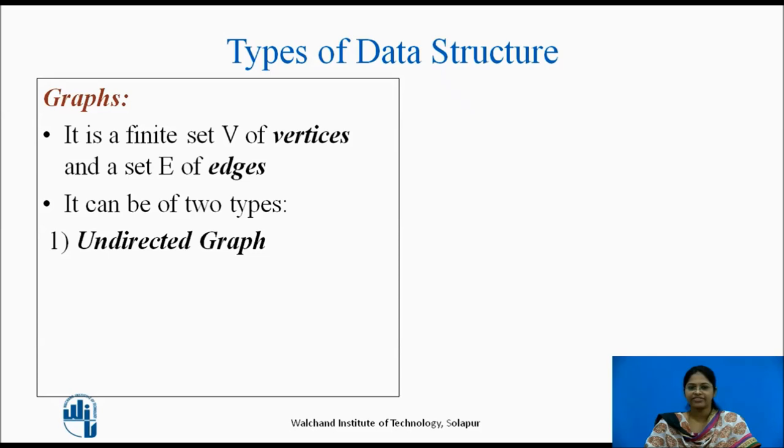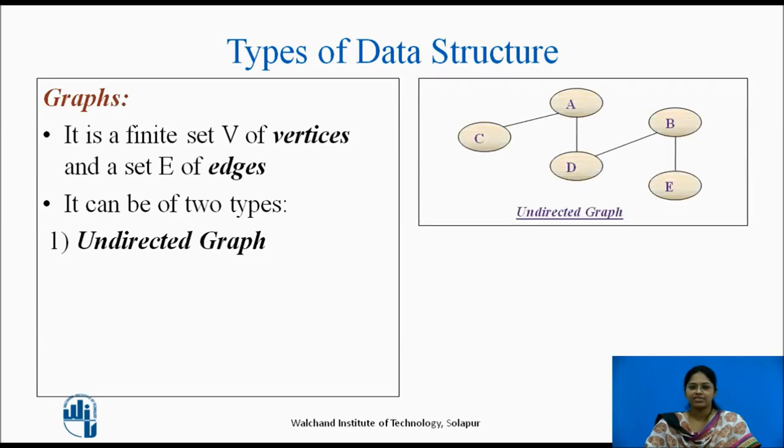Undirected graph: If the pair of vertices that connect the edges are not ordered, that is the direction is not mentioned, then the graph is called as undirected graph. Directed graph.